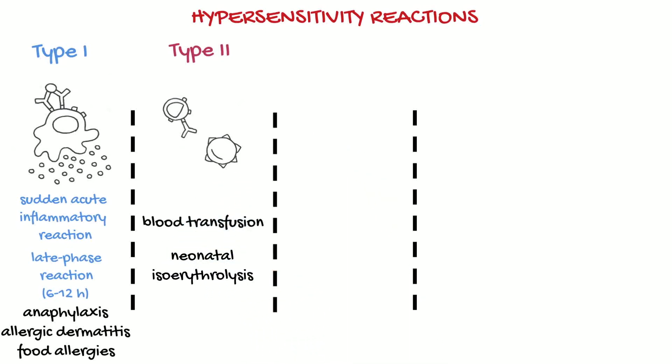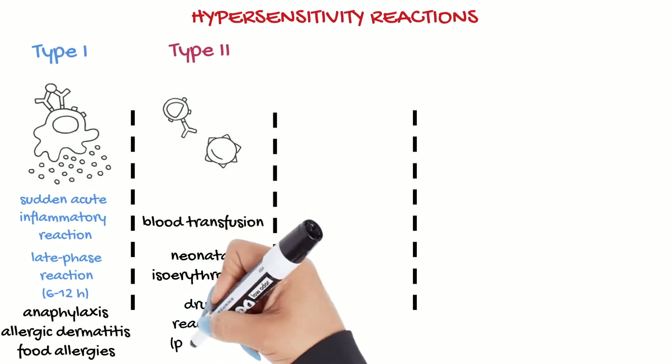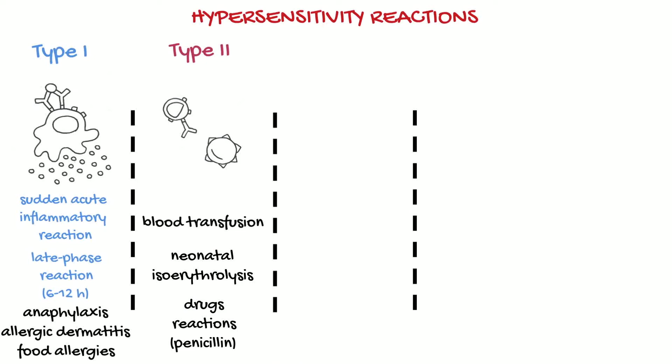Red cells may also be destroyed by the administration of drugs such as penicillin, as they may modify the surface of red blood cells, which are then recognized as foreign and eliminated.